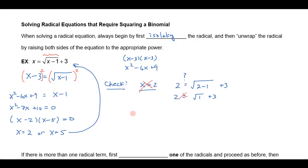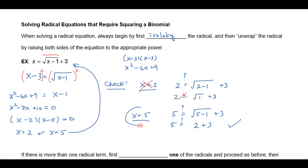Let's try 5. If x is 5, I would get 5. Does that equal the square root of 5 minus 1 plus 3? Well, 5 minus 1 is 4, the square root of 4 is 2, and 2 plus 3 does equal 5, so that one works. Let's draw a circle around that — that's my only answer to that equation.